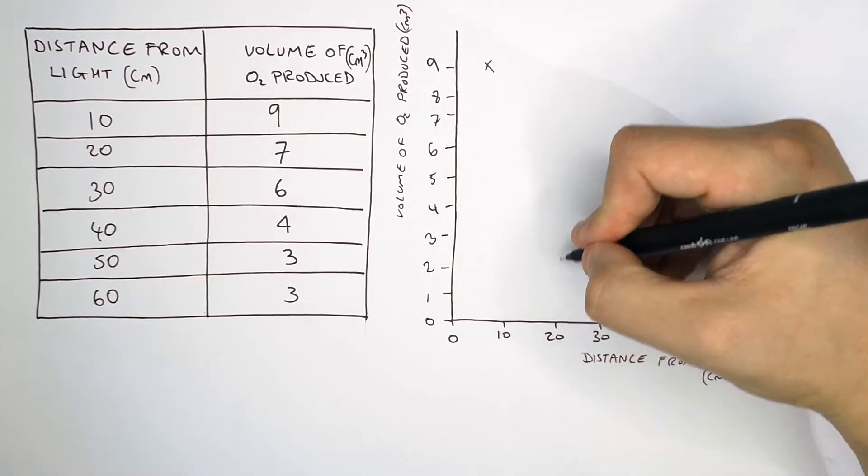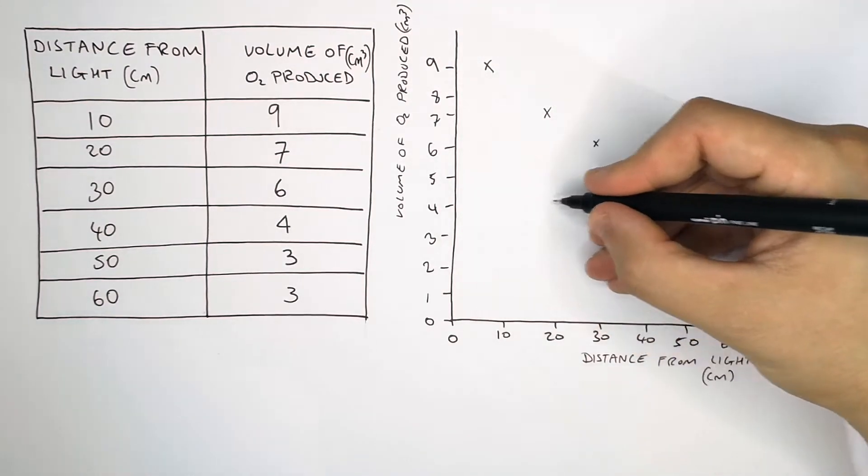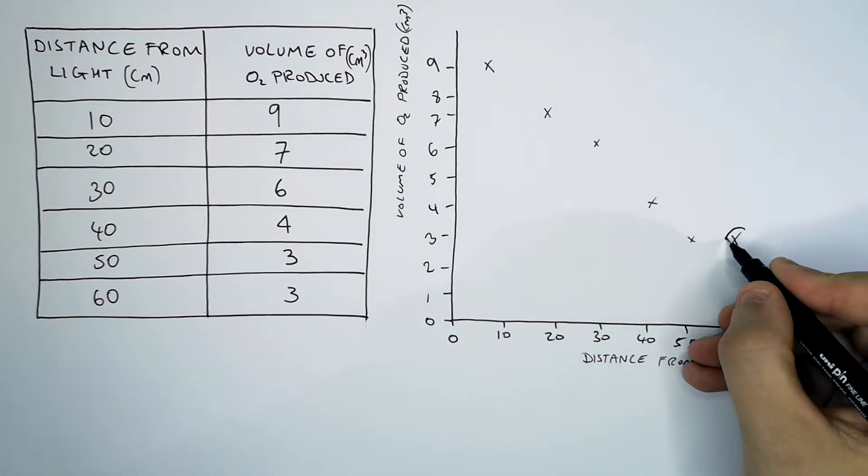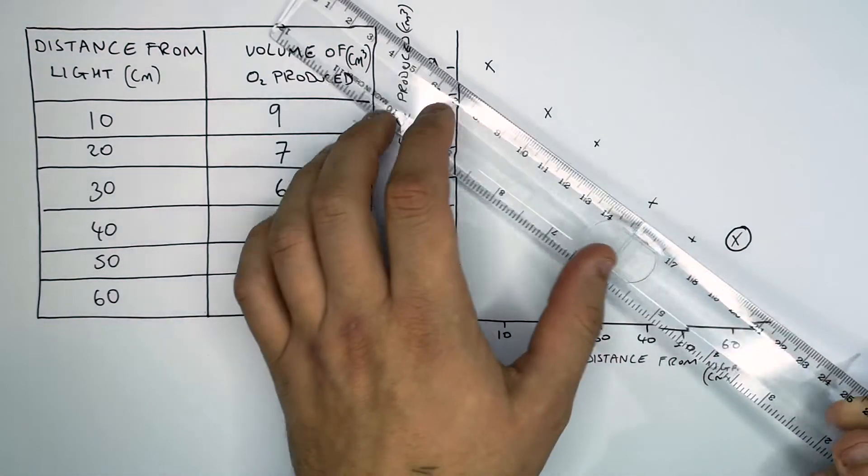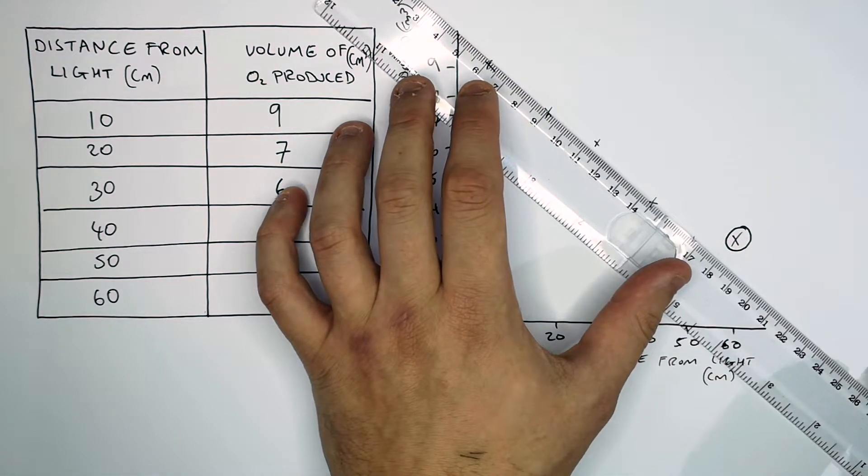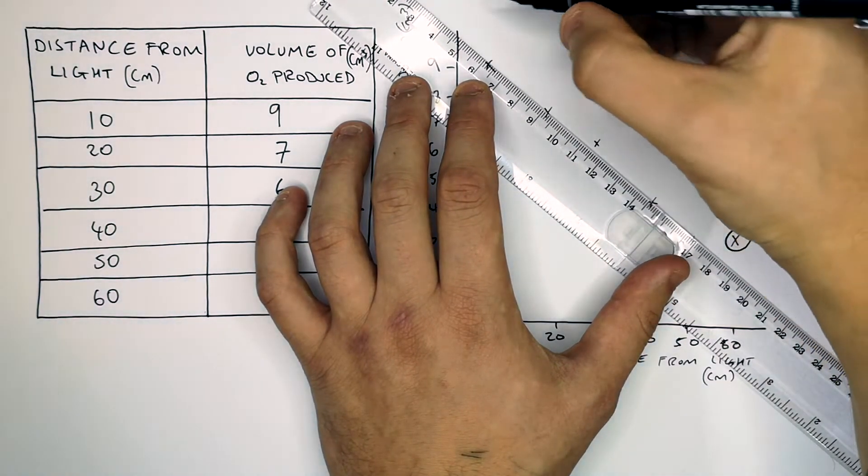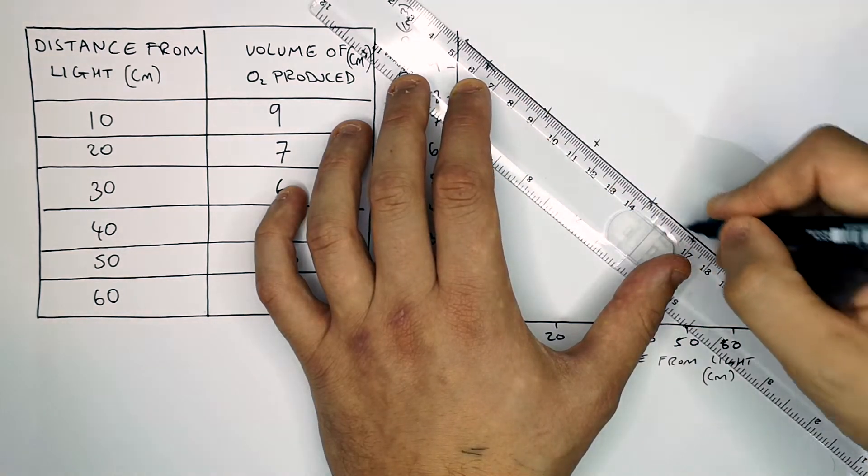So I now plot the points on the graph from the data we collected. I think that I have identified an anomalous result here. It might be, it might not be. But for this case, we're going to exclude it from our line of best fit. And then we draw a line of best fit going through as many of the points as possible.